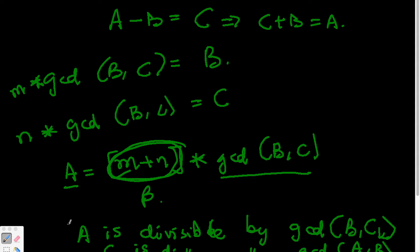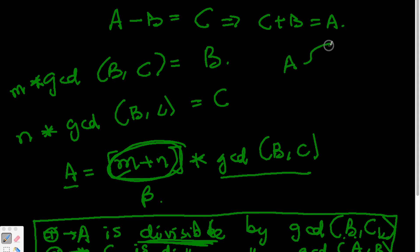And here we have some interesting points to note. With these two observations, we can start making some interesting points. So finally, we can make the observation that A is being divisible by both gcd(B,C) and gcd(A,B).